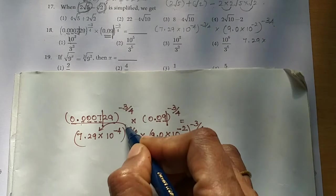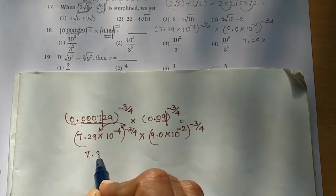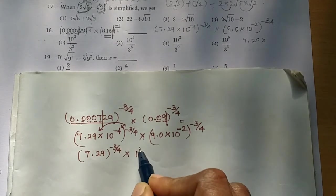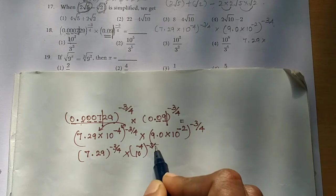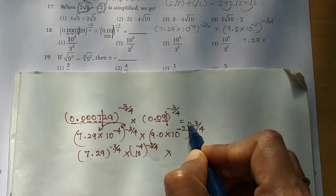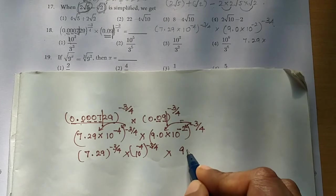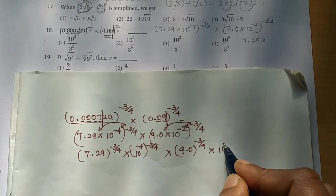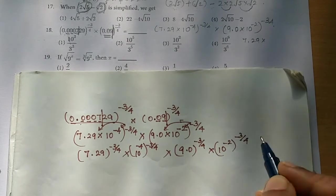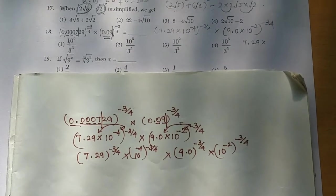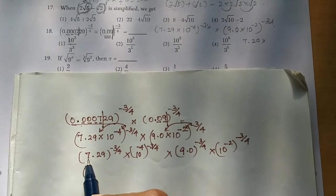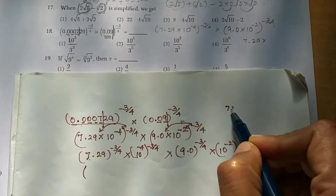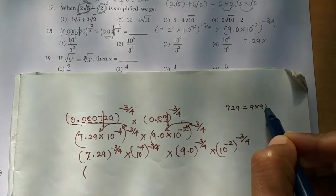So the minus 3 by 4 applies to both numbers. So 7.29 the whole power minus 3 by 4, into 10 power minus 4, the whole power minus 3 by 4, into 9.0 the whole power minus 3 by 4, into 10 power minus 2, the whole power minus 3 by 4.